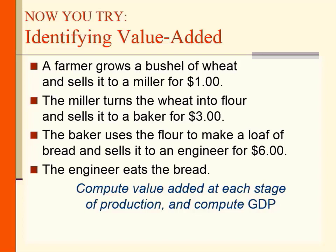At the second stage, the miller turns the wheat into flour and sells it to a baker for $3. The value of output — the flour — is $3, and the value of the intermediate good, the wheat, is $1. So the miller's value added equals $3 minus $1, which is $2. At the third stage, the baker uses the flour to make a loaf of bread and sells it for $6. The value of output is $6 minus the intermediate good — the flour at $3 — so the baker's value added is $3.